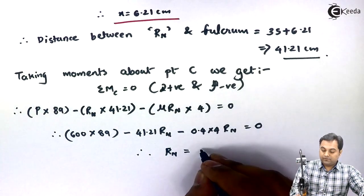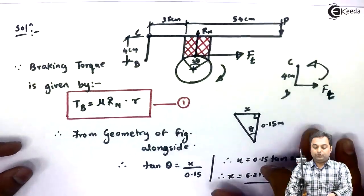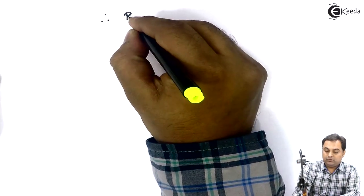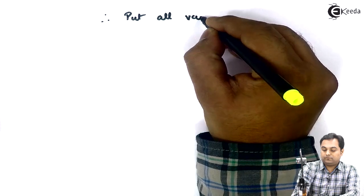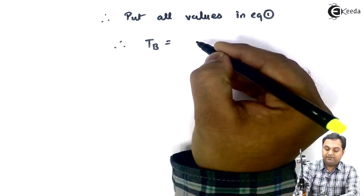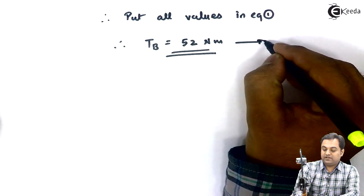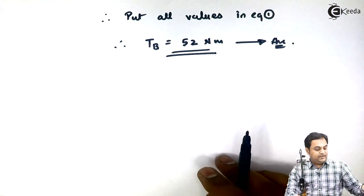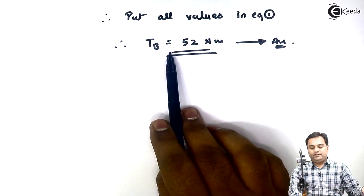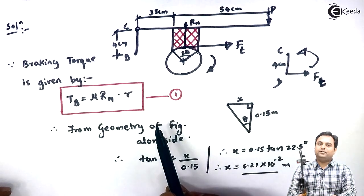R_N = 56 Newton. Putting all values into equation number one: T_B = μ × R_N × R = 0.4 × 56 × 0.15... when I multiply all values I get the braking torque as 52 Newton-meter. So in a single block brake, the torque required to bring this brake drum to rest is 52 Newton-meter. With this we complete the problem.